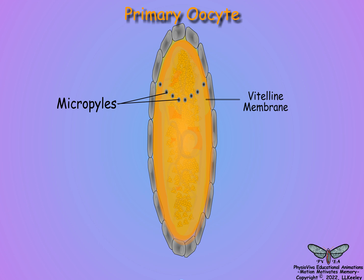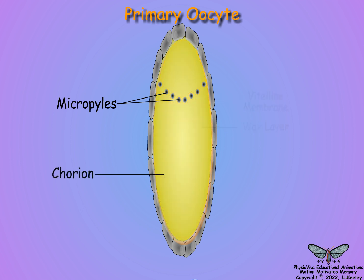A wax layer prevents egg desiccation in many insect species. Finally, a chorion layer is made by the follicular epithelial cells that becomes the outermost layer of the shell. The chorion is comprised of layered proteins that undergo hardening by sclerotization due to protein cross-linking, similar to the cuticle.